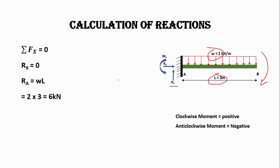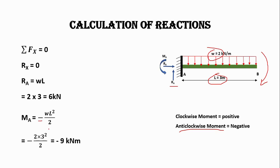Now let's calculate the moment acting on this beam. We have only one support, so all the reactions will be at this support. The total moment is calculated using the formula WL²/2. The minus sign is due to the anti-clockwise direction. After putting in the values, the maximum moment at the support is 9 kilonewton meters, and the minus sign shows it is in the anti-clockwise direction.